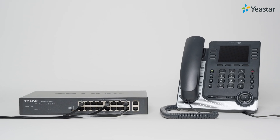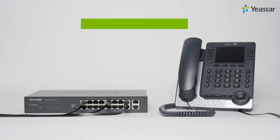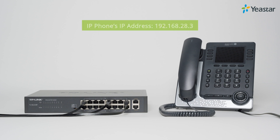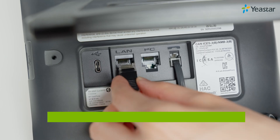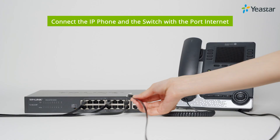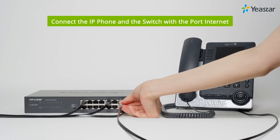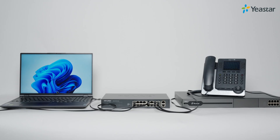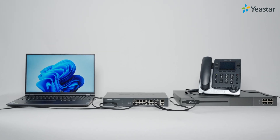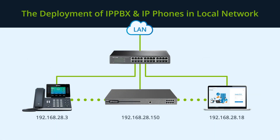Let's see how to deploy the IP phone. We modified this IP phone's IP address already. If you want to learn how to change the IP address of the IP phone, please check the phone user menu. Now simply connect the IP phone and the switch with an ethernet cable. Our PBX and the IP phone have been deployed successfully.